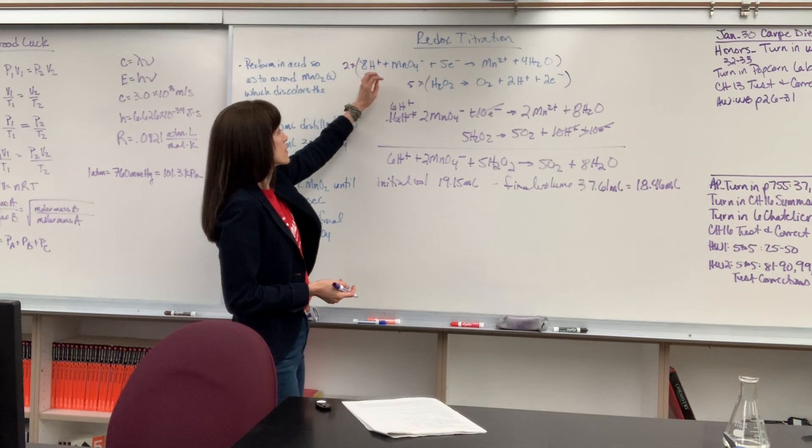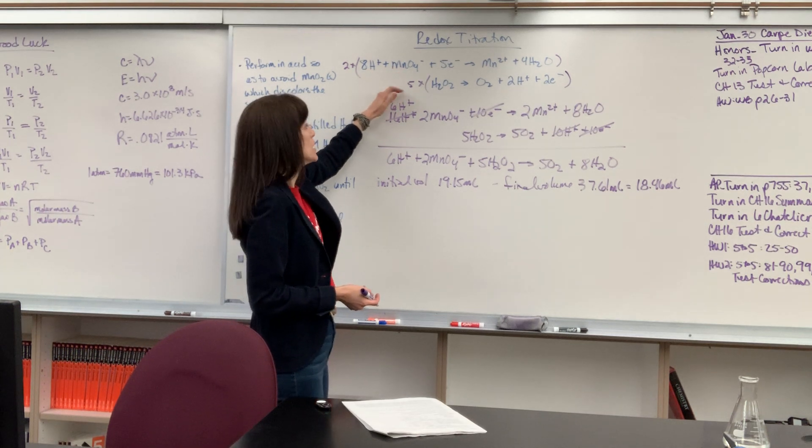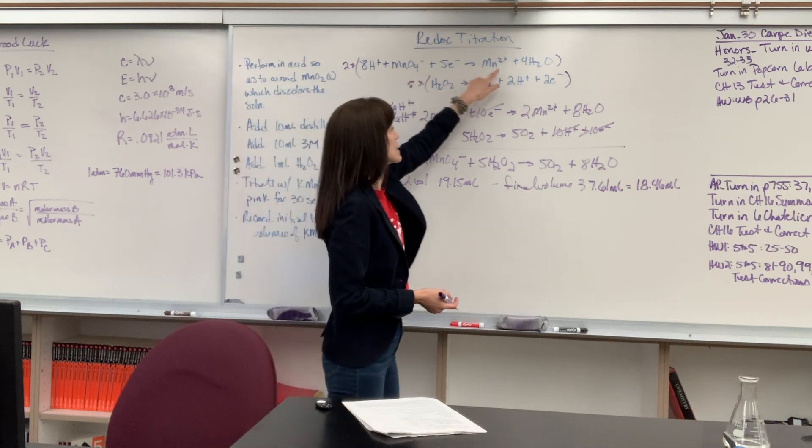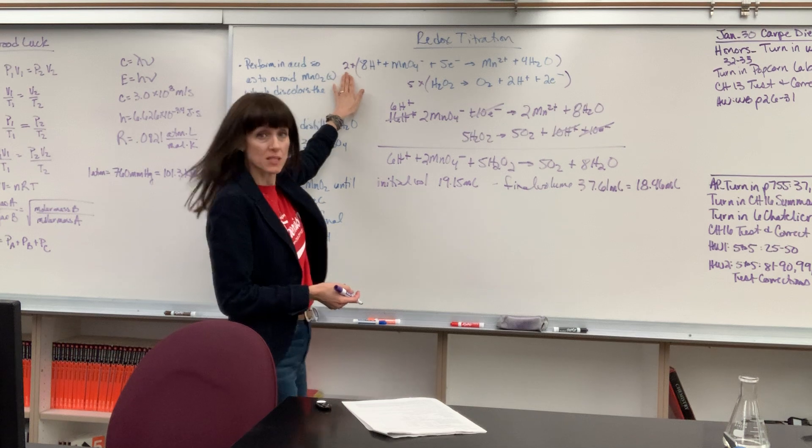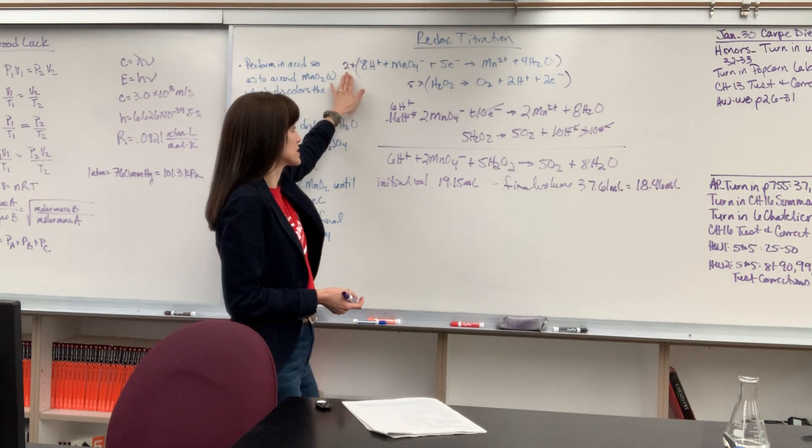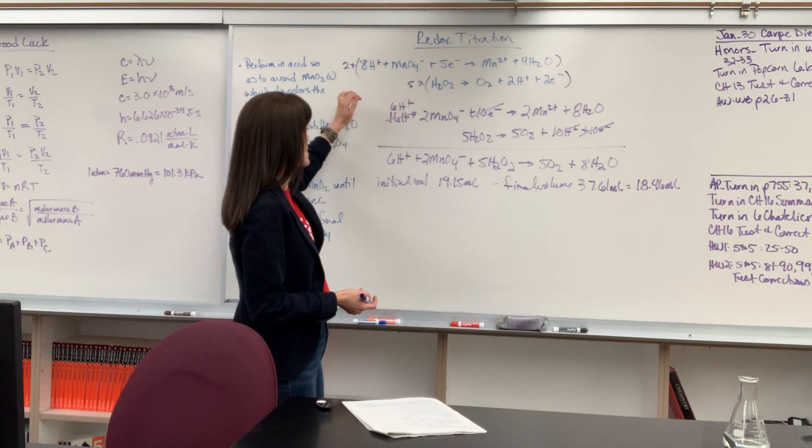Here's your two half reactions. You're going to have the permanganate half reaction and the hydrogen peroxide. Notice I had to balance the electrons gained and lost. I had a 2 and a 5, so I multiplied this by a 2 to get it to 10 electrons gained. I multiplied this half reaction by a 5 to get it to 10 electrons lost.